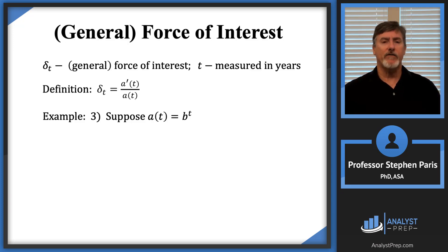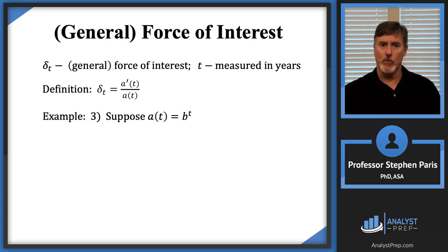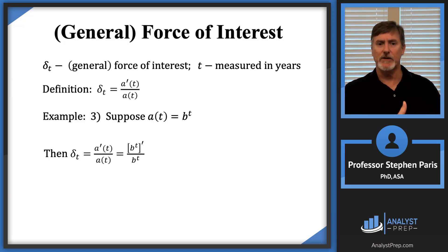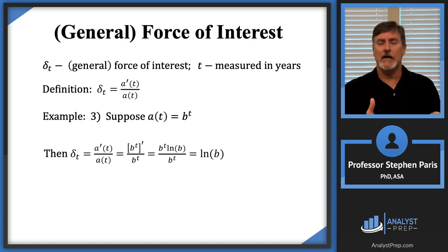What if I had an accumulation function a(t) = b^t? I'm calling this a standard exponential because the exponent is just t. I need to take the derivative of b^t in the numerator. From calculus, the derivative of b^t is b^t times ln(b). The b^t terms cancel in the numerator and denominator, and so I end up with just the force of interest equals ln(b) — the natural log of the base.